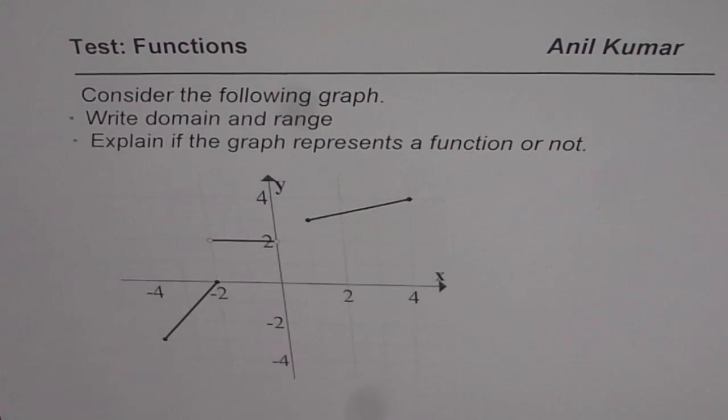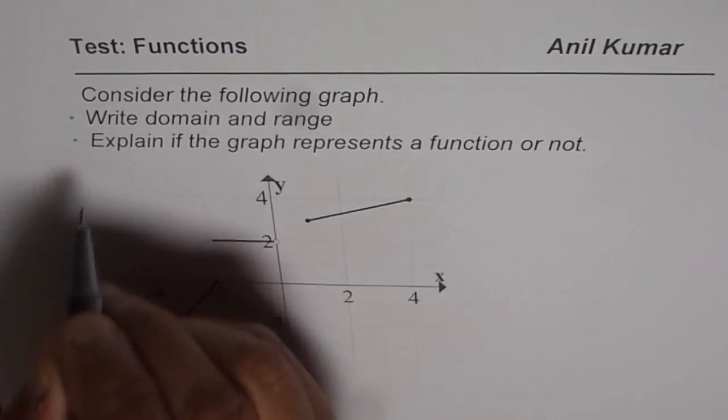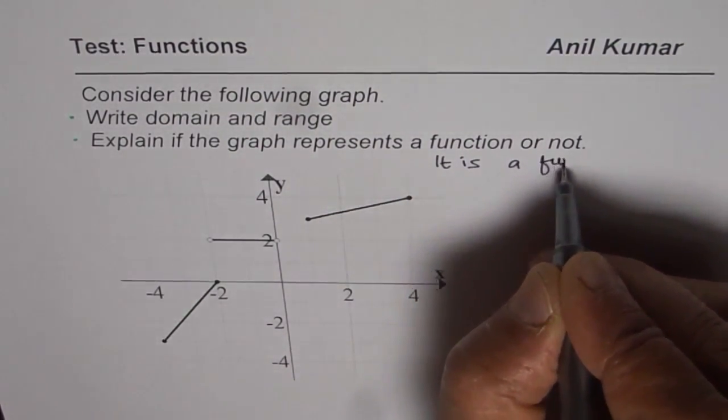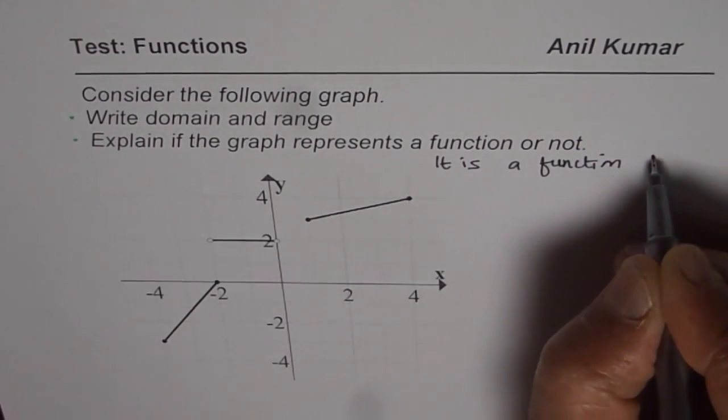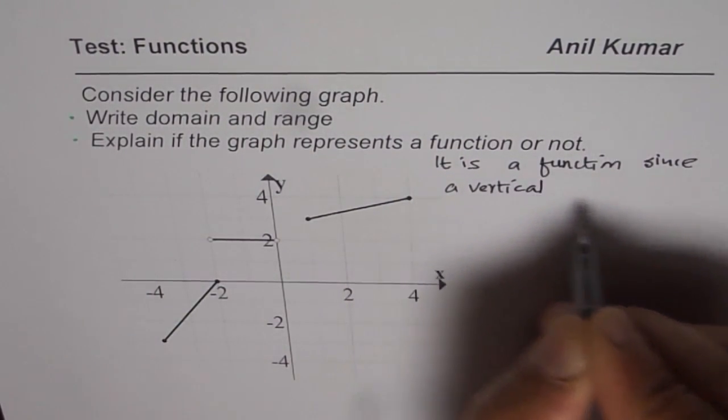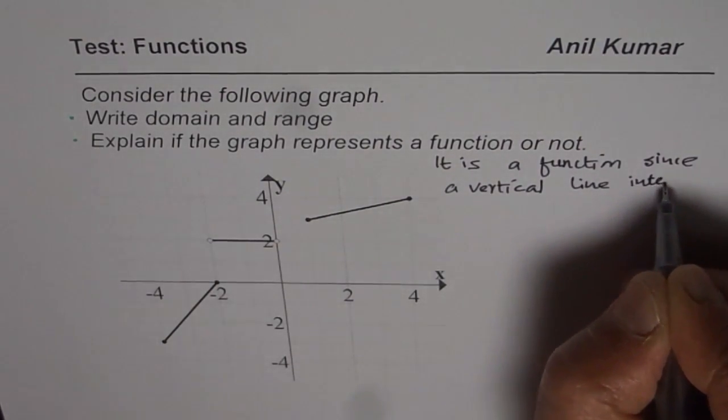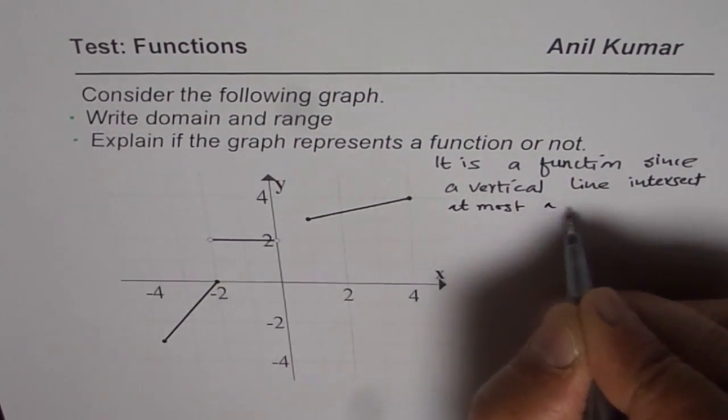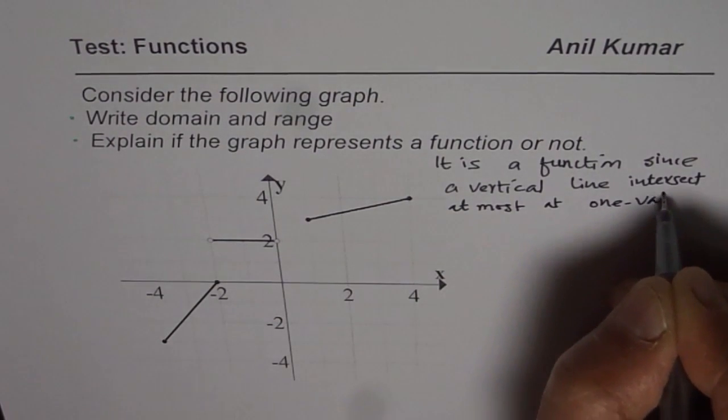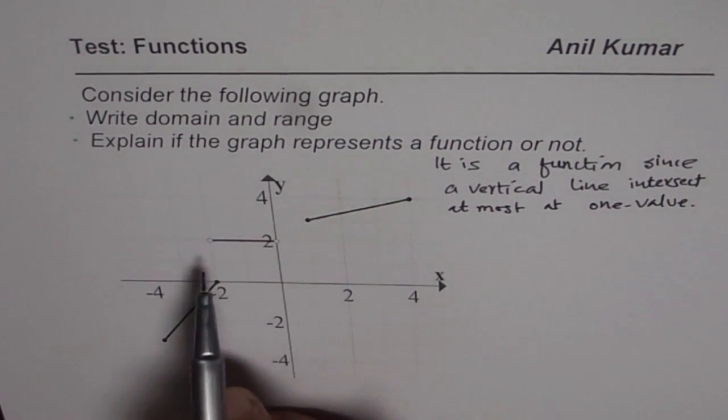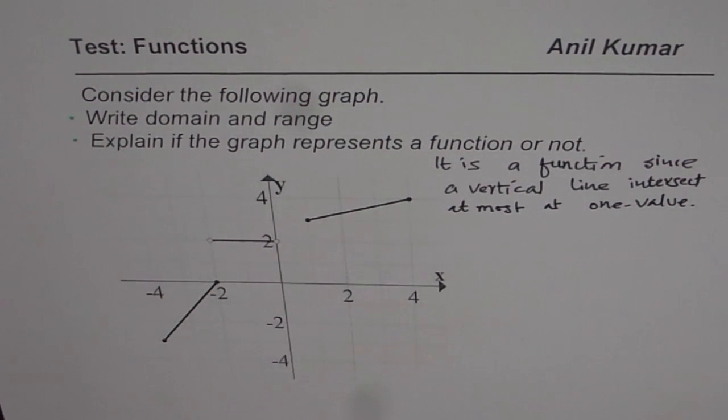So let me first write down the answer for part 2, which is that it is a function since a vertical line intersects at most at one value. So it passes vertical line test, or you can say in the domain of the function, the y value is unique. So that is how you could answer it.